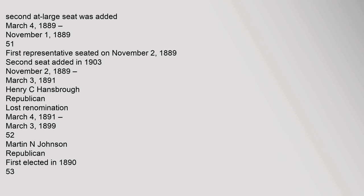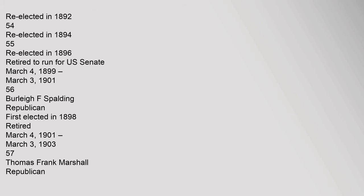From November 2, 1889 to March 3, 1891 (51st Congress): Henry C. Hansbrow, Republican, lost renomination. From March 4, 1891 to March 3, 1899 (52nd–55th Congresses): Martin N. Johnson, Republican, first elected in 1890, re-elected in 1892, 1894, and 1896, then retired to run for U.S. Senate.